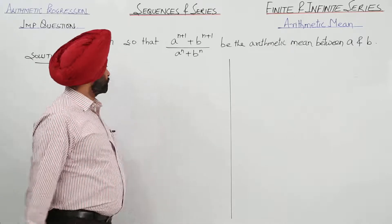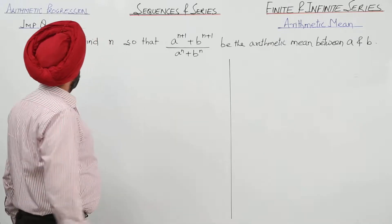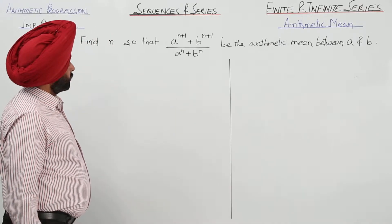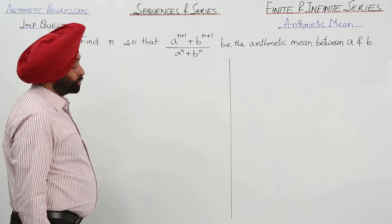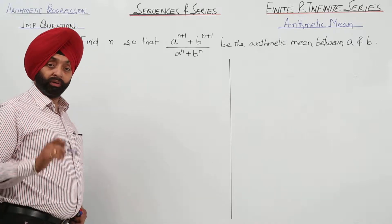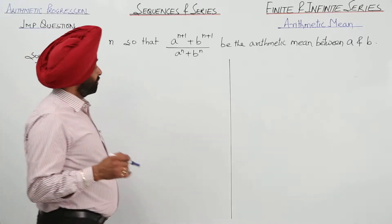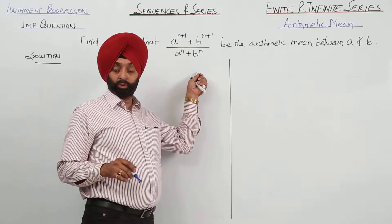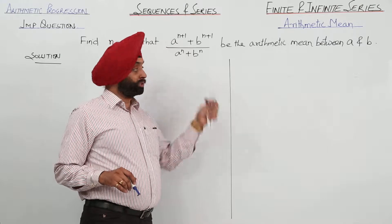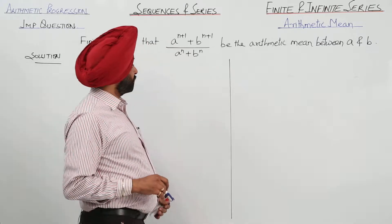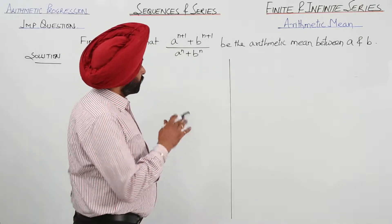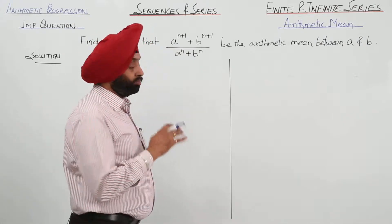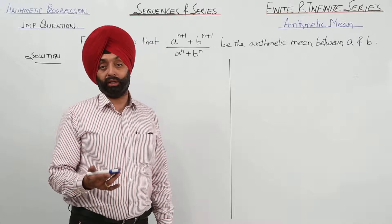Now, very important question. Find n so that a raised to power n plus 1 plus b raised to power n plus 1, upon a raised to power n plus b raised to power n, is the arithmetic mean between a and b.